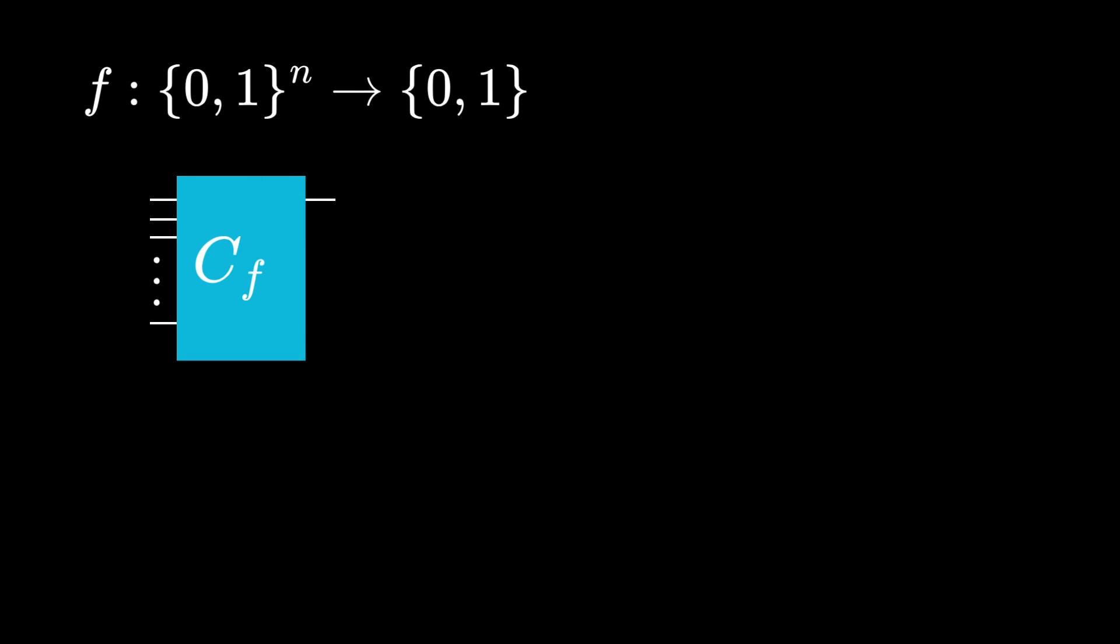If this function is computable, then there exists a boolean circuit to simulate it. By circuit here, we mean a boolean circuit that includes gates like AND, OR, XOR, etc. Physical realizations of these gates are diodes and transistors.